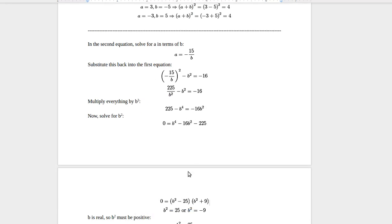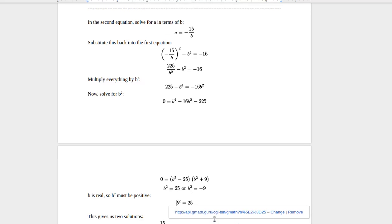So that is definitely, I think, the longest step because you have to guess and check. And then you get b squared equals 25 or b squared equals negative 9. But b is a real number, so b squared equals negative 9, that's wrong. So you get b squared equals 25, and then b equals plus or minus 5. And this gives us two solutions.